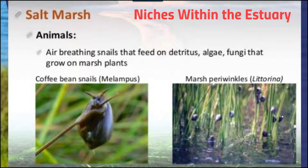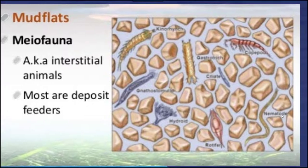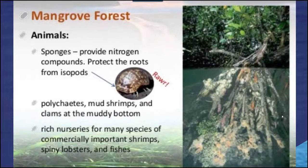The mudflat areas are inhabited by meiofauna — interstitial organisms such as worms, ciliates, and copepods that feed along the detritus and other materials found within those different sediments. Within a mangrove forest, we find something slightly different: animals such as sponges provide nitrogen compounds and protect the roots from isopods. There are polychaetes, mud shrimp, and clams in the muddy bottom, and a rich nursery of many different species.